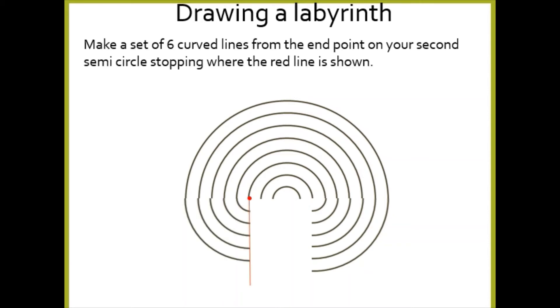Make a set of six curved lines from your end point. So you've got your compass here and drawing your one, two, three, four, five curved lines. We're going to have to change that to five curved lines, one, two, three, four, five, from the end point on your second semicircle, stopping where the red line is shown. Okay, so stopping at that straight line from your dot there.